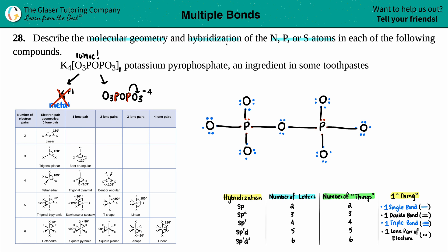Before drawing those single bonds, I forgot to add the four electrons. This compound has a -4 charge, which means we gained four electrons. We always add extra electrons to the more electronegative element — in this case, oxygen. So I'll distribute one extra dot each to four of the oxygens. That accounts for the added four electrons.